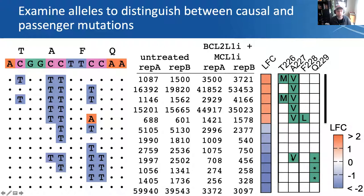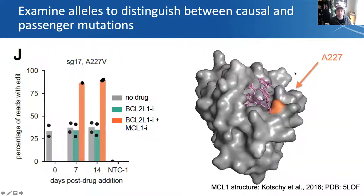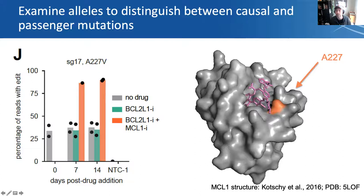We can translate enriched and depleted alleles into amino acid space. In this particular case, every allele with the A227V mutation enriched in the presence of the two small molecule inhibitors, whereas the T226N mutation sometimes comes along for the ride but is clearly not causal. There is one example where an allele with A227V does not enrich, but in that same allele just downstream there's a stop codon — so we predict this to be a loss-of-function allele rather than a drug-resistant mutation. The enrichment of the A227V allele is clear when we add both small molecules.